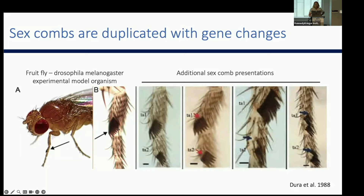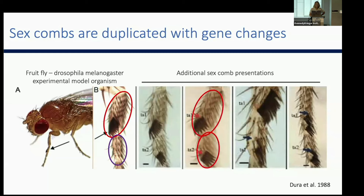There were extra sex combs, additional sex combs, or polycomb broadly. Oftentimes, these changes represent dramatic changes in body shape or different cell types. You can kind of see that the leg is made up of different segments — the segment with the sex comb and then a different segment. When you have duplication of the sex combs, you can see that one leg segment was duplicated, and oftentimes that's at the expense of some other body part.